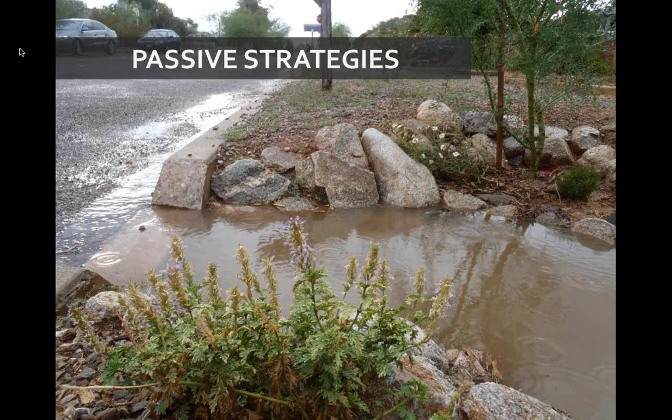I'm going to jump into passive rainwater harvesting strategies, which I'll discuss in the same breath as passive stormwater strategies. The basic premise — slow it, spread it, and sink it — applies to both water runoff reduction and reduction of stormwater contaminants. Whether it's something as small as this curb cut in Tucson going into a mulched rock basin, the idea is thinking of small, dispersed solutions and thinking like a healthy watershed.